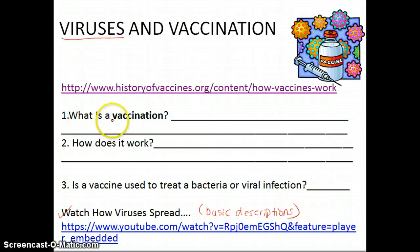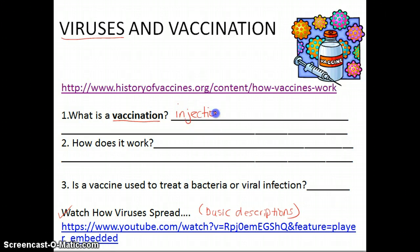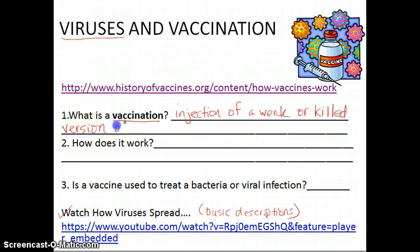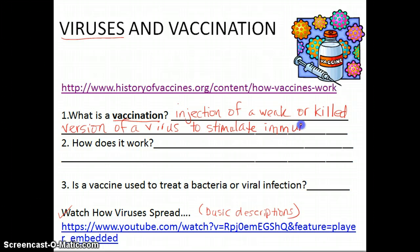A vaccination is when you receive, through injection, a weak or killed version of a virus. To understand what a vaccination is, you have to understand a little bit about your immune system. Your immune system responds to antigens on anything that comes into your body that it perceives as being foreign.